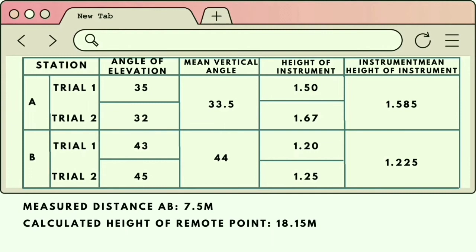The mean vertical angle for Station A is 33.5 and in Station B is 44. For the height of the instrument, Station A is 1.50 and 1.67. In Station B is 1.20 and 1.25 respectively.